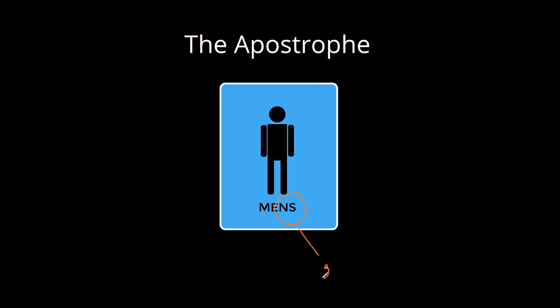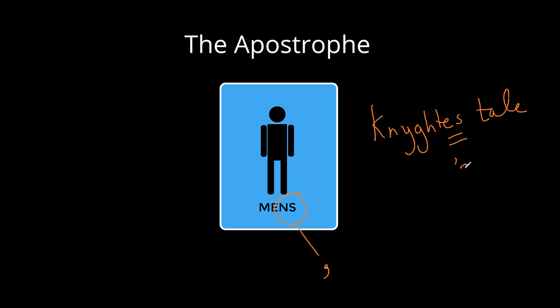If you go back, for instance, to the Middle Ages and you read the works of Geoffrey Chaucer, the 14th century poet, when you read the Canterbury Tales you come across the Knight's Tale, and Chaucer refers to this as the Kniechtestale. So here beginneth the Kniechtestale, and you'll notice here that ES stands in for apostrophe S. So the apostrophe is not entirely an ancient punctuation mark.